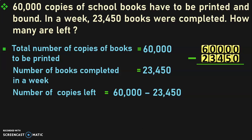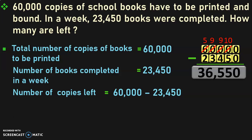Both of these are 5-digit numbers, so you will not have any problem writing them one below the other. Begin the subtraction from the 1s place. 0 minus 0 is 0. In the 10s, 100s, and 1000s places, you have 0s in the bigger number. So, you move to the 10,000s place and regroup 6 ten-thousands to be 5 ten-thousands and 10 thousands. This 10,000s has to be regrouped again to get 9,000s and 10 hundreds, and again to get 9 hundreds and 10 tens. 10 minus 5 in the 10s place is 5. In the 100s place, 9 minus 4 is 5. In the 1000s place, 9 minus 3 is 6. In the 10,000s place, 5 minus 2 is 3. So, the answer is 36,550.